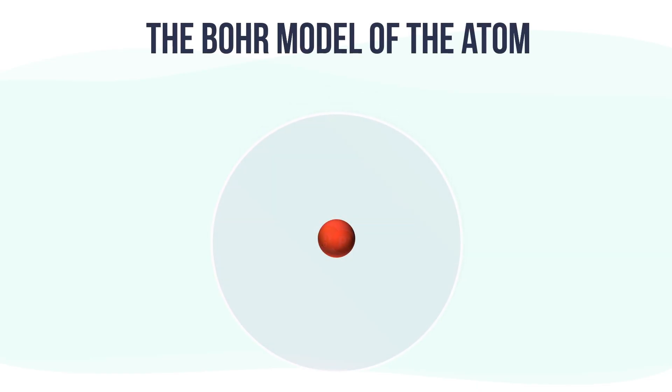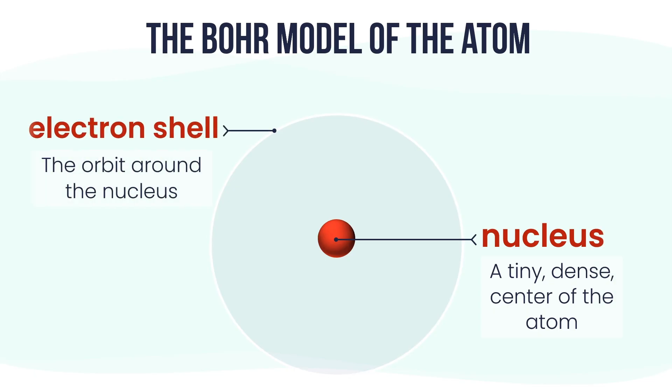To understand atoms better, let's use the Bohr or planetary model of the atom. It shows two important parts: first, the nucleus, the tiny dense center of the atom, and second, the electron shells or orbits that surround the nucleus. Imagine a mini-solar system where the sun is the nucleus and the planets are electrons moving around it in rings. This model helps us visualize how atoms are structured.